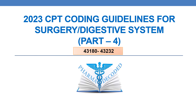Hello everyone. Now let us discuss the 2023 CPT coding guidelines for surgery of the digestive system, Part 4. In the current session, we will be focusing on CPTs in the range 43180 to 43232.